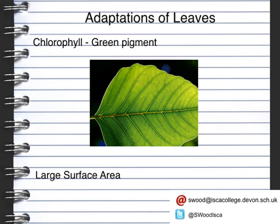The next thing you'll notice is the vein. The vein means that you've got what we call a network of vascular bundles. These can transport water to and from the leaf, and can also be used to transport glucose away from the leaf once photosynthesis has happened.